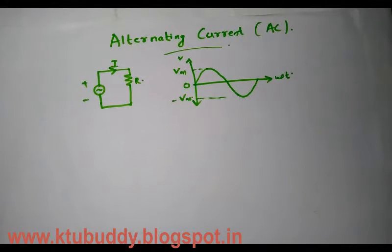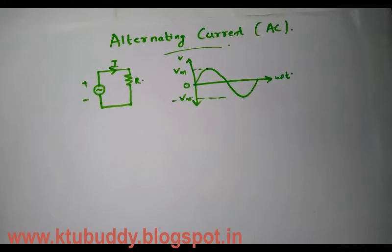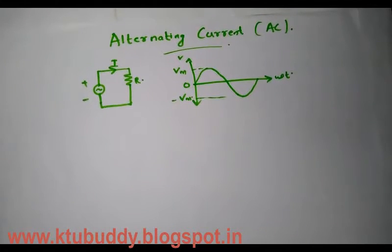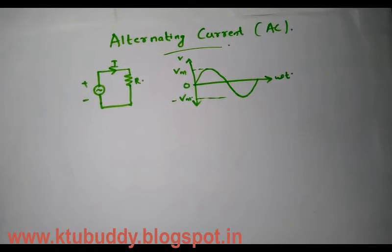In an AC system, the voltage acting in the circuit changes its polarity at regular intervals of time, and the current resulting due to such a voltage is known as alternating current.